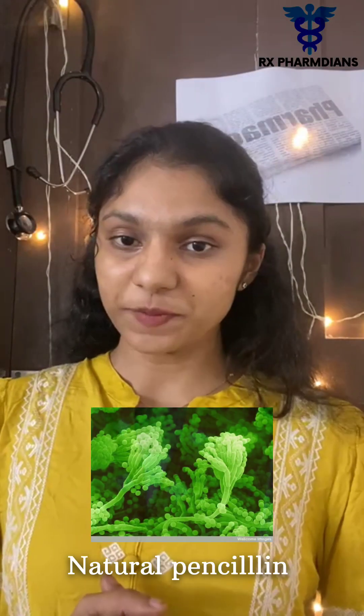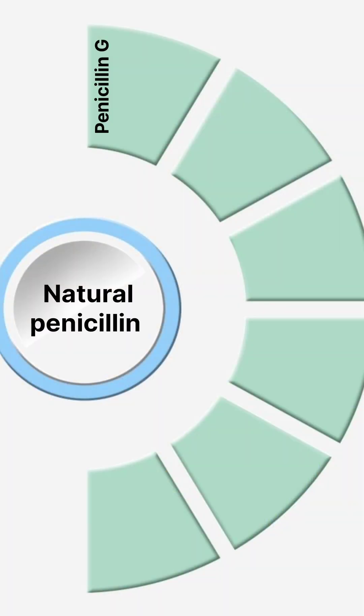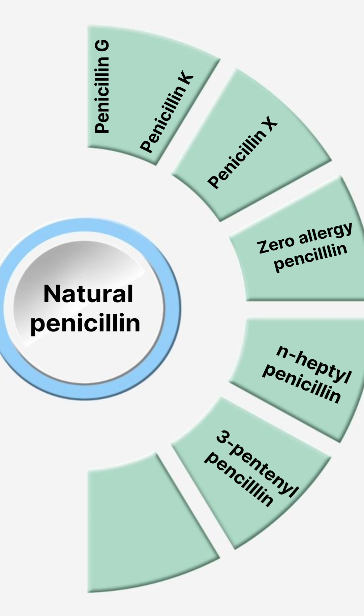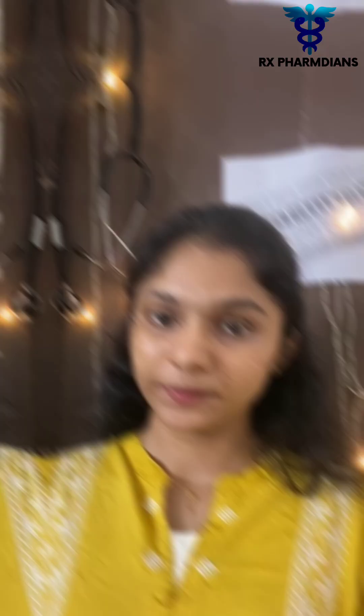First, natural penicillin. The drugs under natural penicillin include Penicillin G, Penicillin K, Penicillin X, dihydro penicillin, heptyl penicillin, 3-pentenyl penicillin, and 2-pentenyl penicillin.